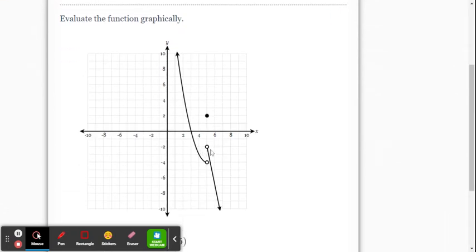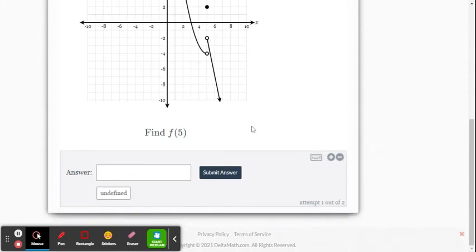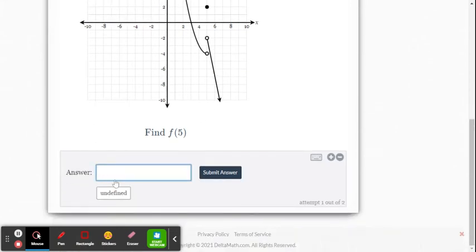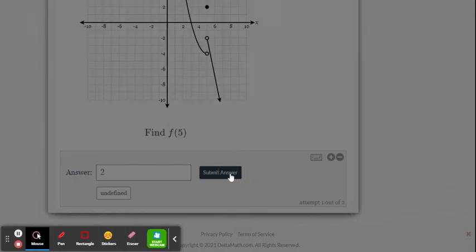Here's another one. Now, when the answer is open points, that means that that is not included in the graph. So it says find f of 5. So when x is 5, what's y? You've got to be careful here. It's the solid point here. So that solid point y value is 2. Submit the answer.